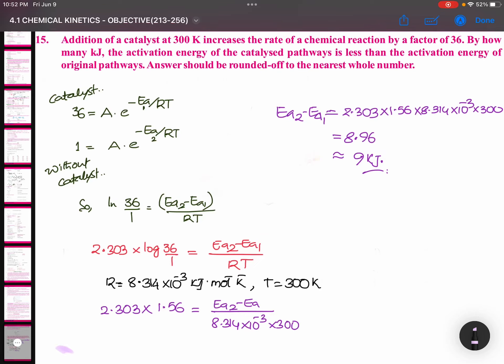Chemical kinetics - one very interesting question. Addition of a catalyst at 300 Kelvin increases the rate of a chemical reaction by a factor of 36. By how many kilojoules is the activation energy of the catalyzed pathway less than the activation energy of the original pathway? Answer should be rounded off to the nearest whole number.